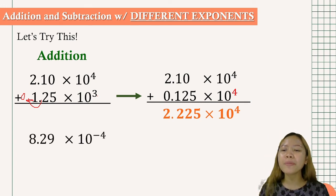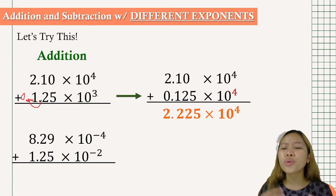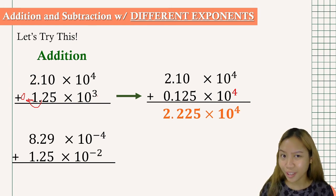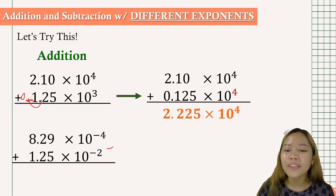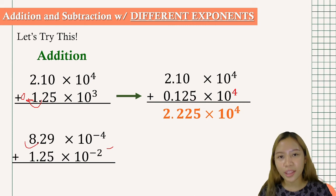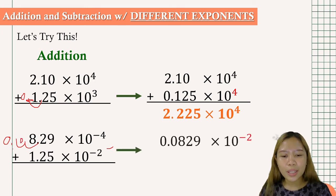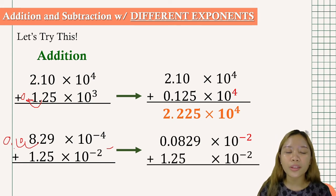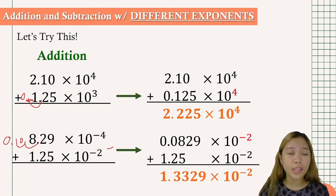Another example: 8.29 times 10 to the negative 4th plus 1.25 times 10 to the negative 2. The larger exponent is negative 2. We move 8.29 two places to the left, adding 2 to the exponent from negative 4 to negative 2, giving 0.0829 times 10 to the negative 2. Now we add: 0.0829 plus 1.25 equals 1.3329 times 10 to the negative 2.